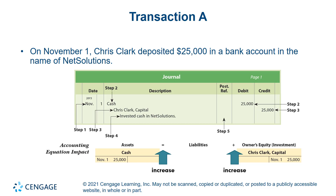Next, a brief description may be entered below the credited account. And finally, the post and reference column is left blank when the journal entry is initially recorded. This column is used later in the chapter when the journal entry amounts are transferred to the account in the ledger.